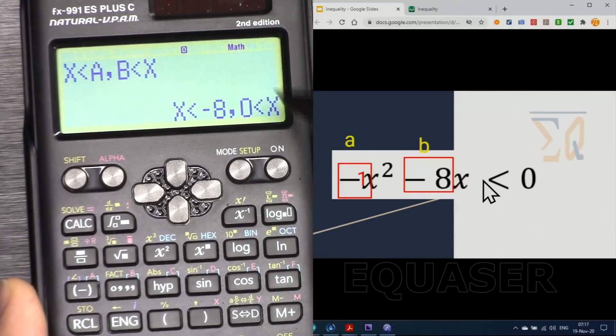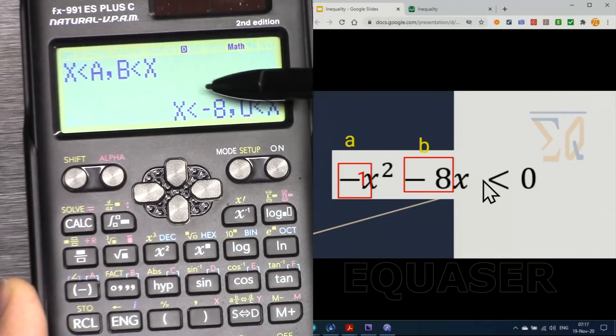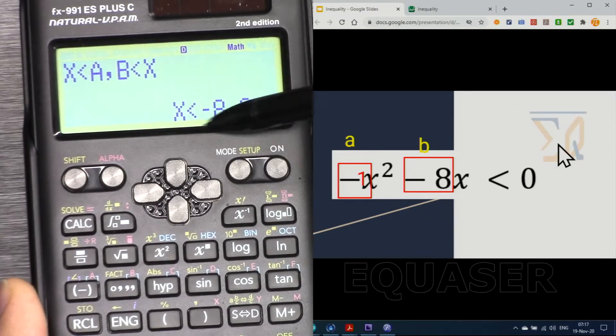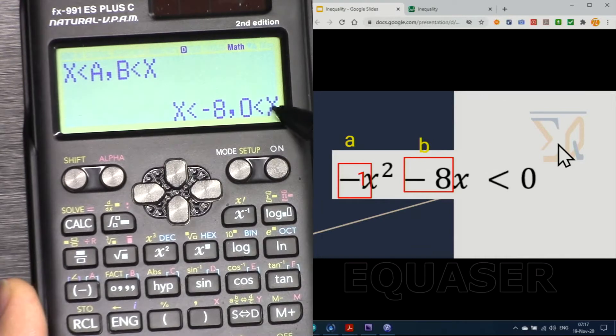And C, because we don't have any other term, we enter 0. And after that press equal and it will be evaluated. For the function to be smaller than 0, x is smaller than a which is 8, so x is smaller than 8 and x is greater than 0.